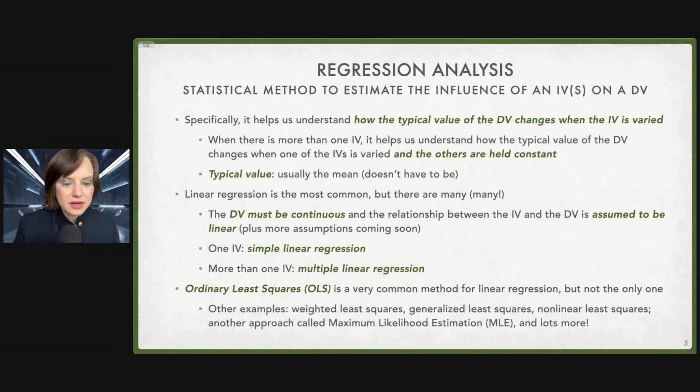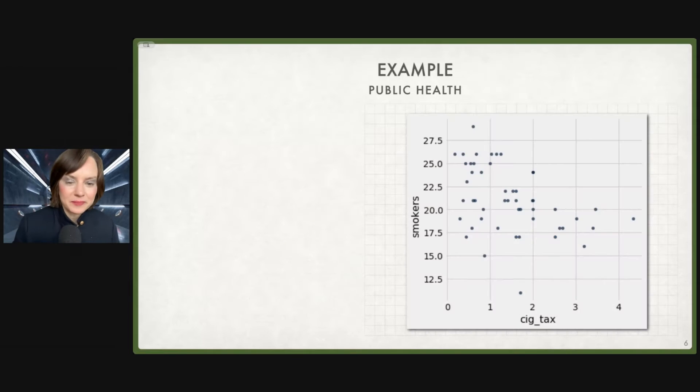Ordinary least squares or OLS is a super common method for linear regression. It's not the only one. You may come across as you continue other techniques: weighted least squares, generalized least squares, nonlinear least squares. There's a whole other approach called maximum likelihood estimation, MLE, and there's lots more. You could spend the rest of your life learning regression techniques and then hand-wringing over which one to use. That's basically the life of a lot of data scientists and statisticians.